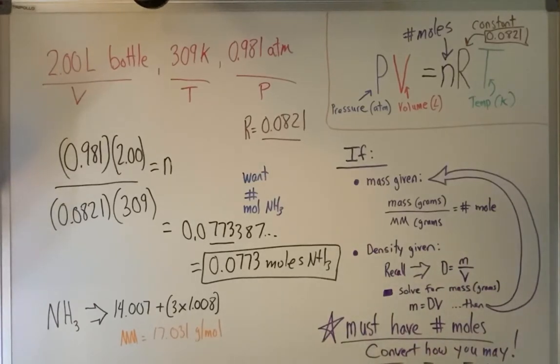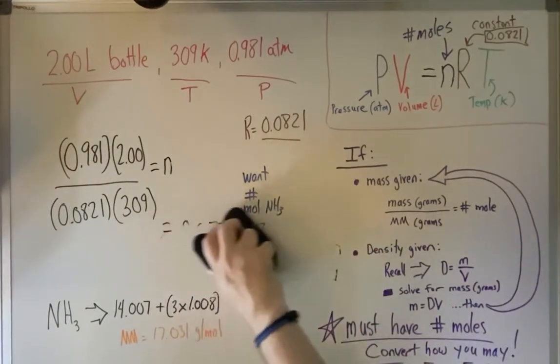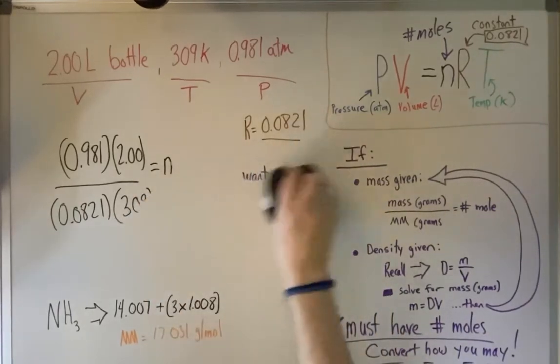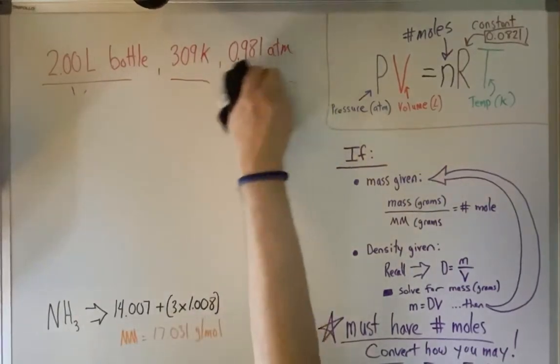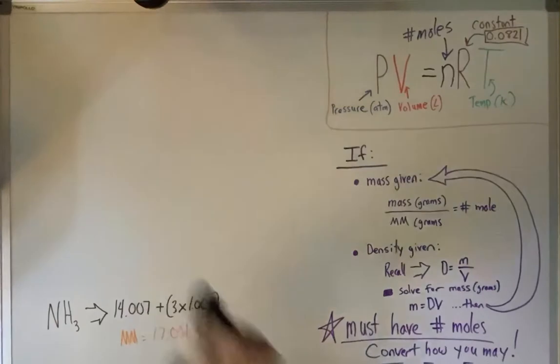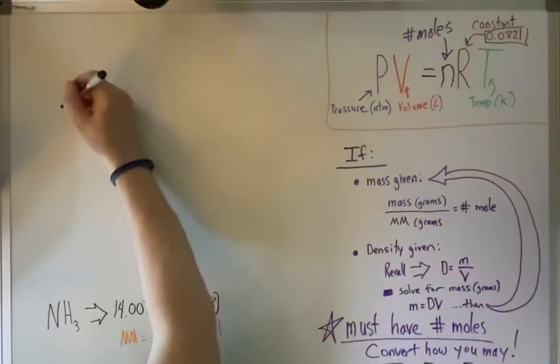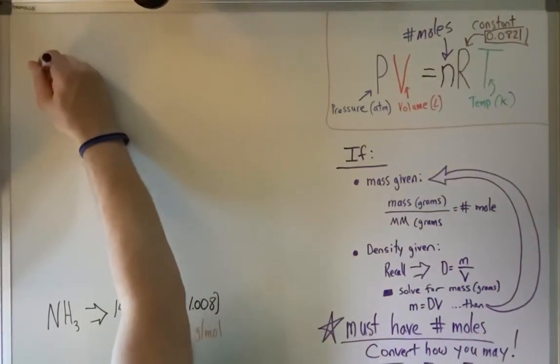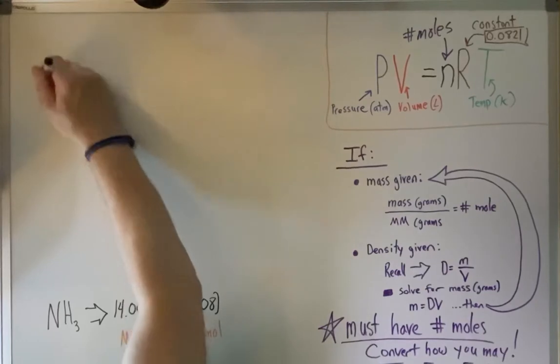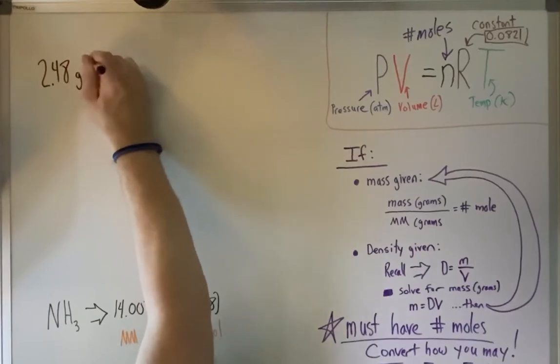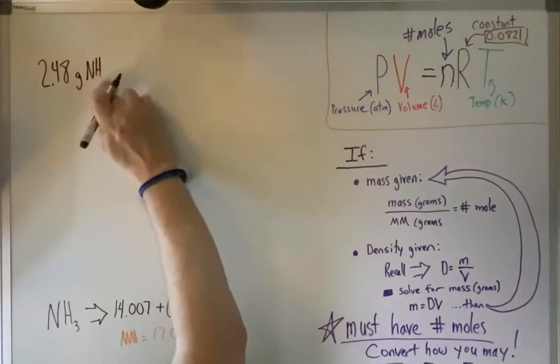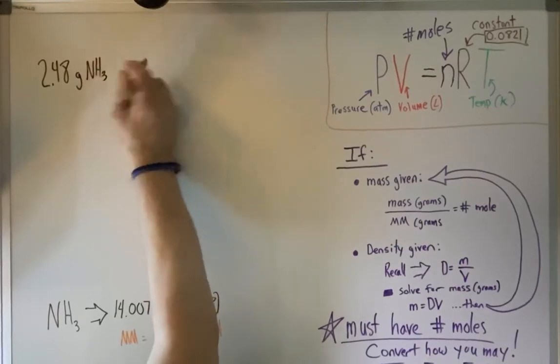So that's a problem that's looking for moles. So let's try a problem that's not looking for moles, that instead is looking for one of the other variables. So in other words, this problem will either give you your gas in moles, or it'll give your gas in grams. So, let's try that out. So let's say you have, and we'll use ammonia still. Let's say you have 2.48 grams of NH3, sorry, NH3. NH4 is ammonium NH3.